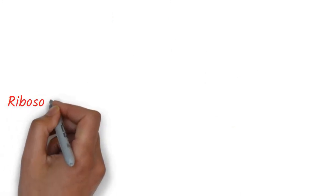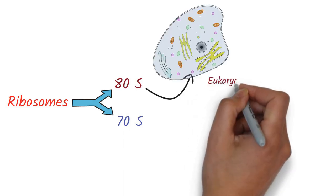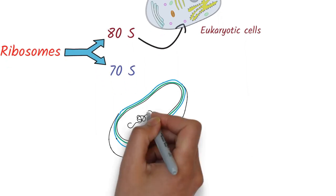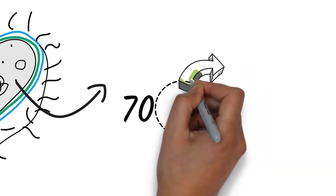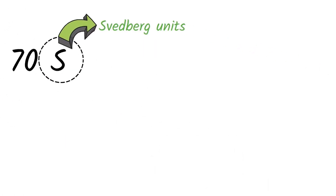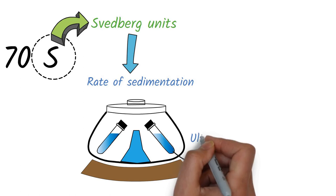Ribosomes are of two types: 70S and 80S. The 80S ribosomes are present in eukaryotic cells, while bacterial cells contain 70S ribosomes. The 'S' denotes Svedberg units, which indicate the rate of sedimentation during ultracentrifugation.